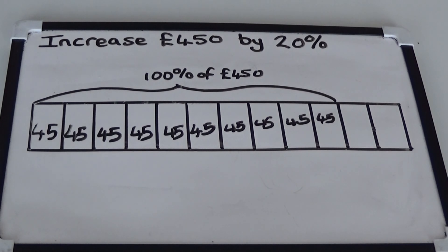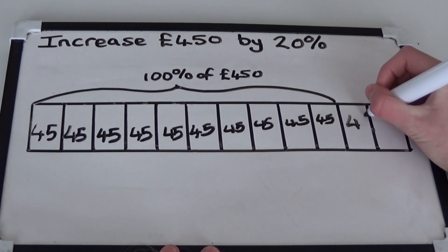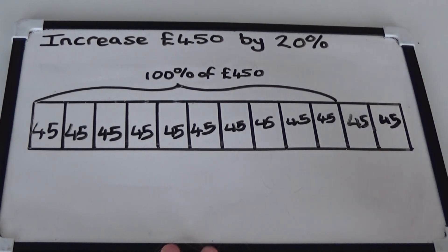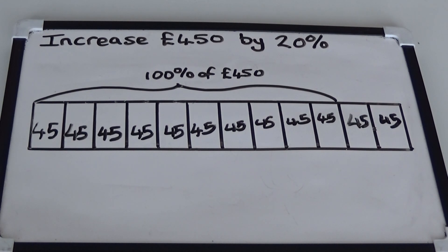On our bar model we're going to add 20% to the £450. 20% is £90, so we need to add £90 to £450. £450 plus £90 equals £540. So if the £450 laptop is increased in price by 20%, the new price will be £540.